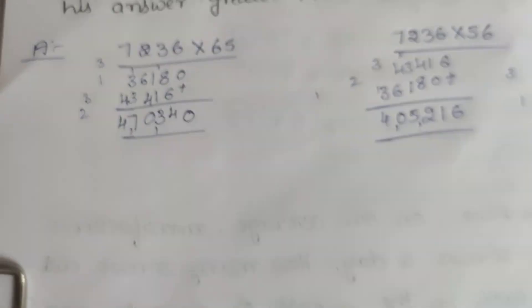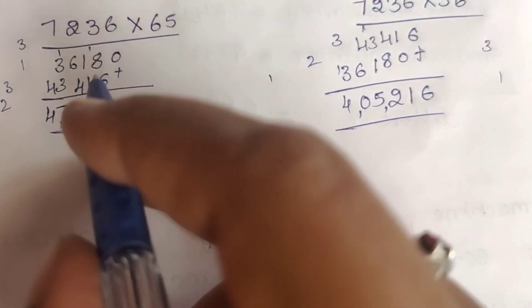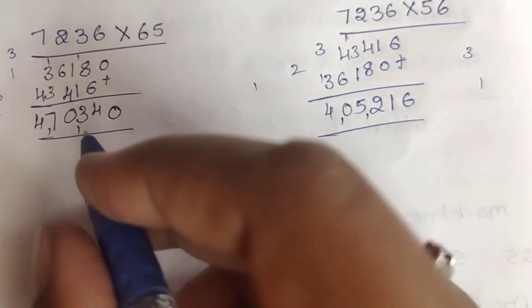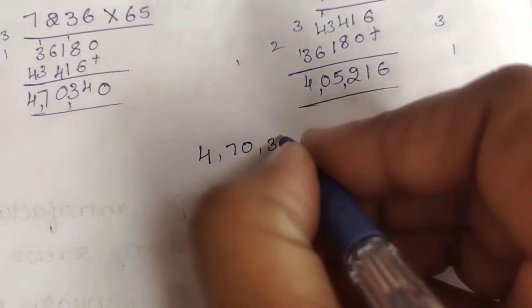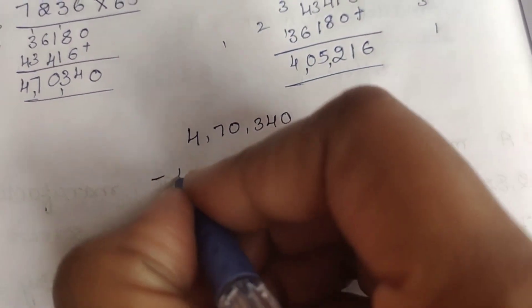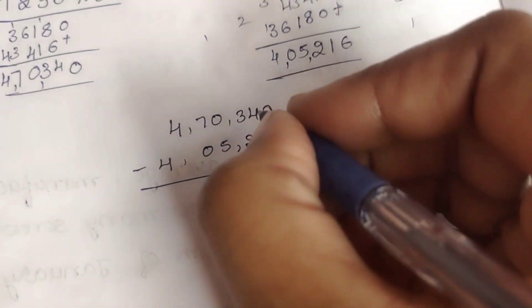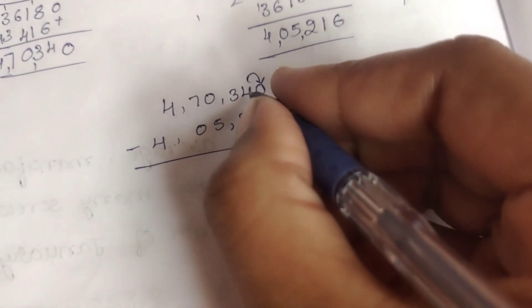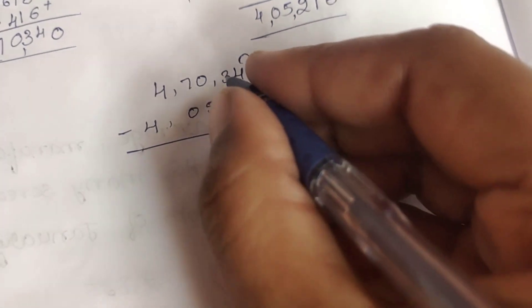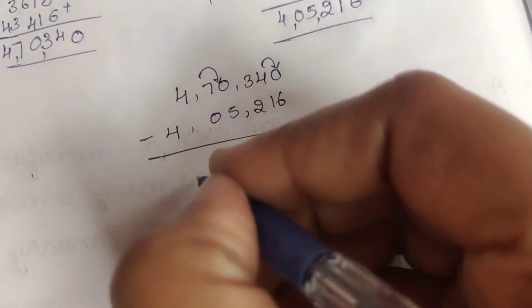Now subtract: 4 lakh 70,340 minus 4 lakh 5,216. So, 1 carry, 10 minus 6 is 4. Now, 3 minus 1 is 2, 3 minus 2 is 1, then 1 carry, 10 minus 5 is 5, and 6 minus 4 is 0. So the answer is 65,124.